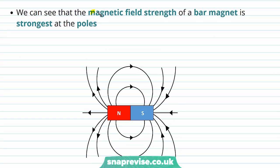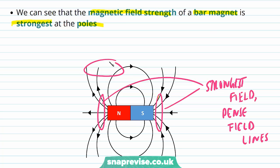With this knowledge, we can see that the magnetic field strength of a bar magnet is strongest at the poles. At the poles are where the field lines are most dense, and so the field is strongest. Further away from the poles, we see that the field lines are much more sparse.